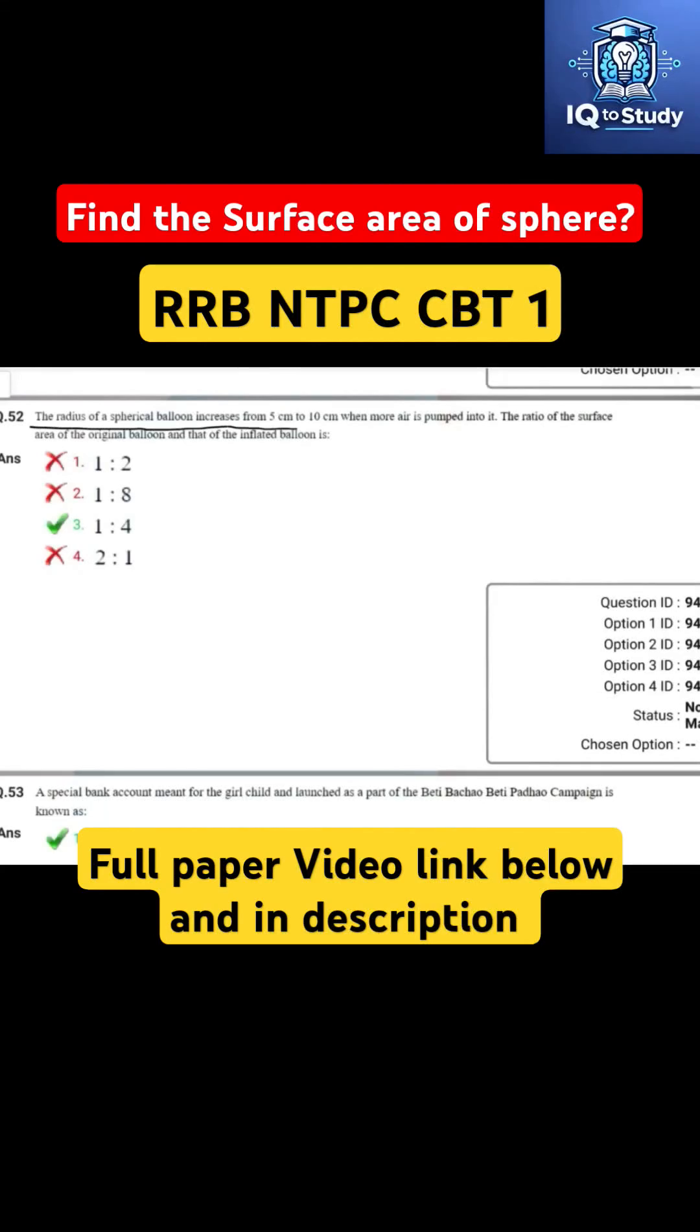The balloon radius increases from 5 cm to 10 cm when more air is pumped into it. The ratio of the surface area of the original balloon and that of the inflated balloon is being asked, given the radius is 5 and 10.